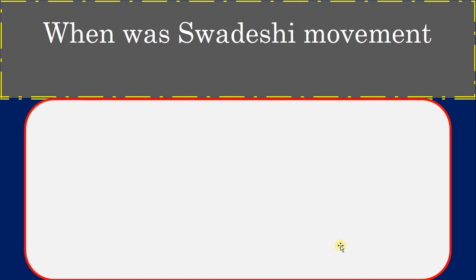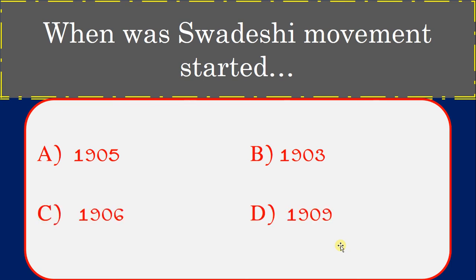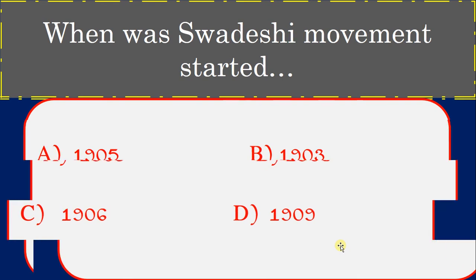When was the Swadeshi movement started? Options: 1905, 1903, 1906, 1909. Correct answer: 1905.